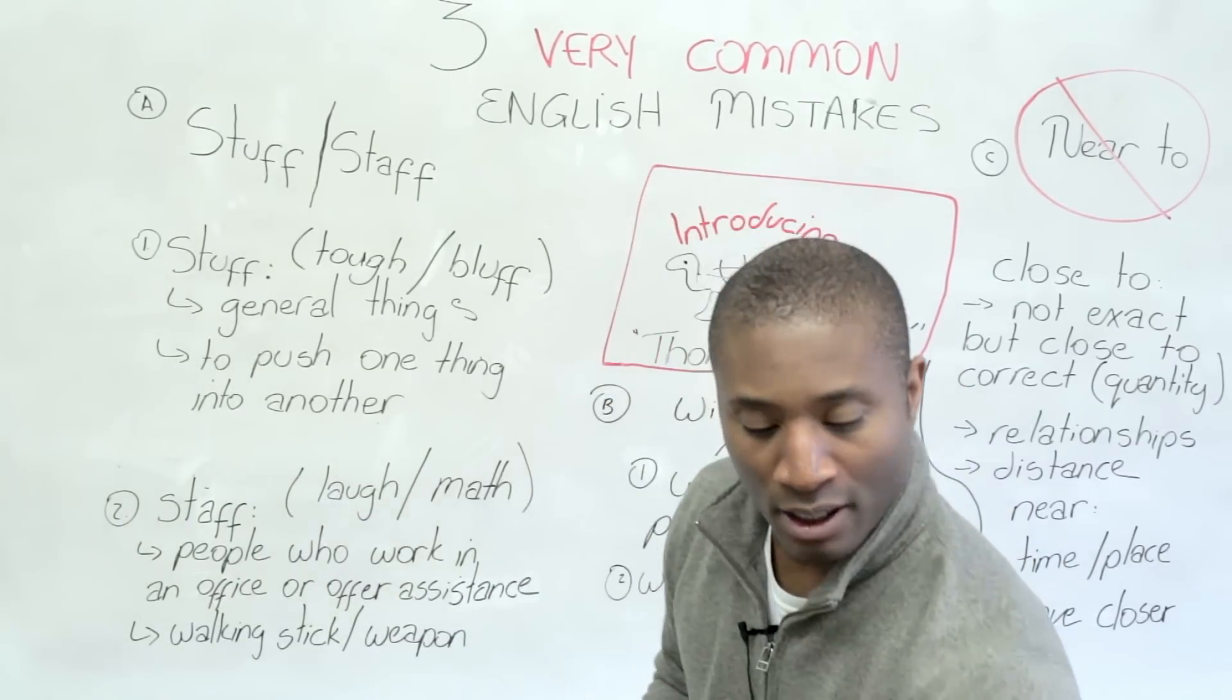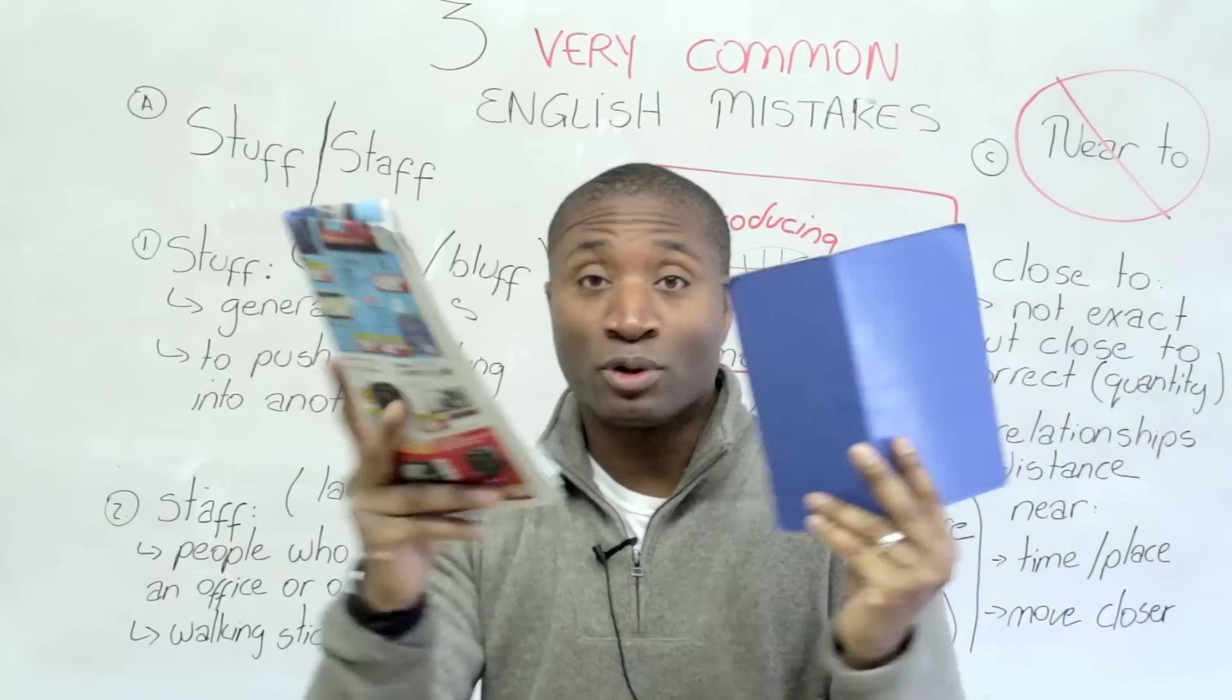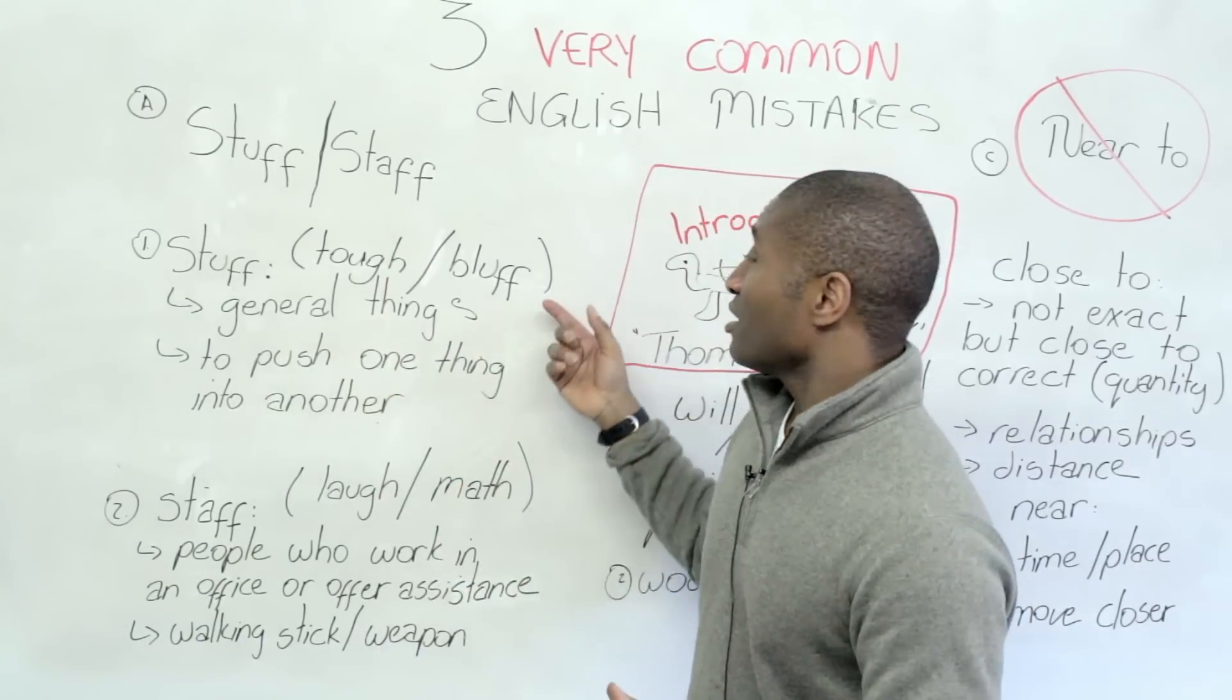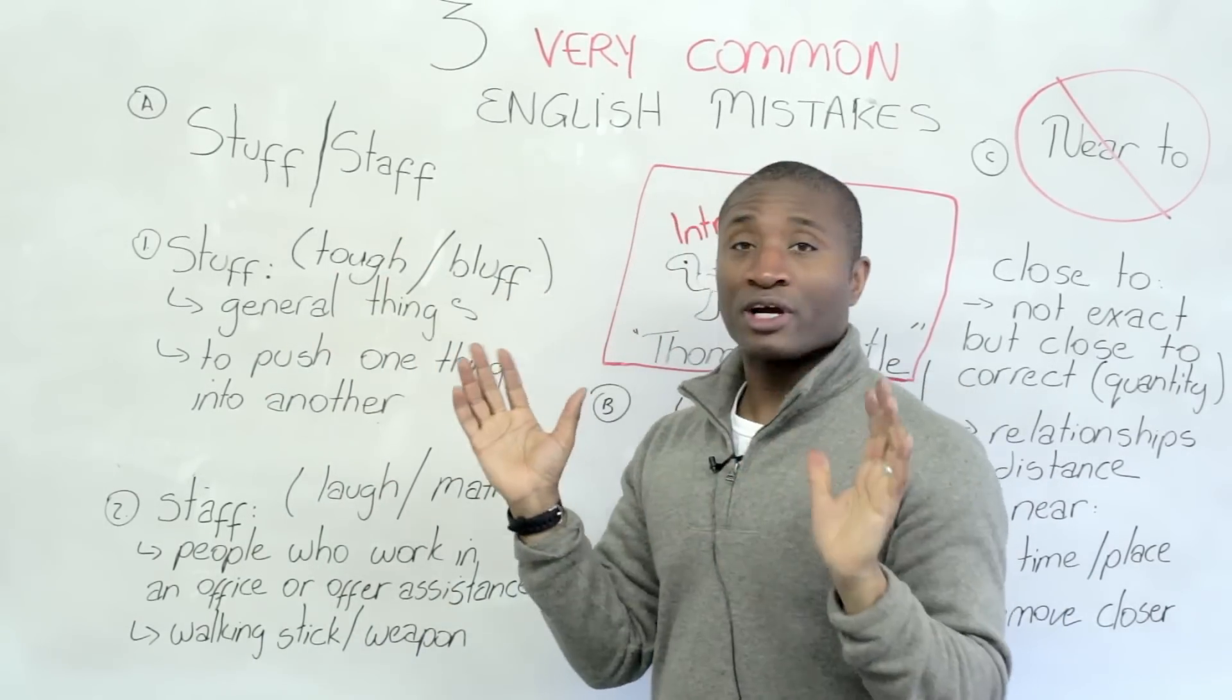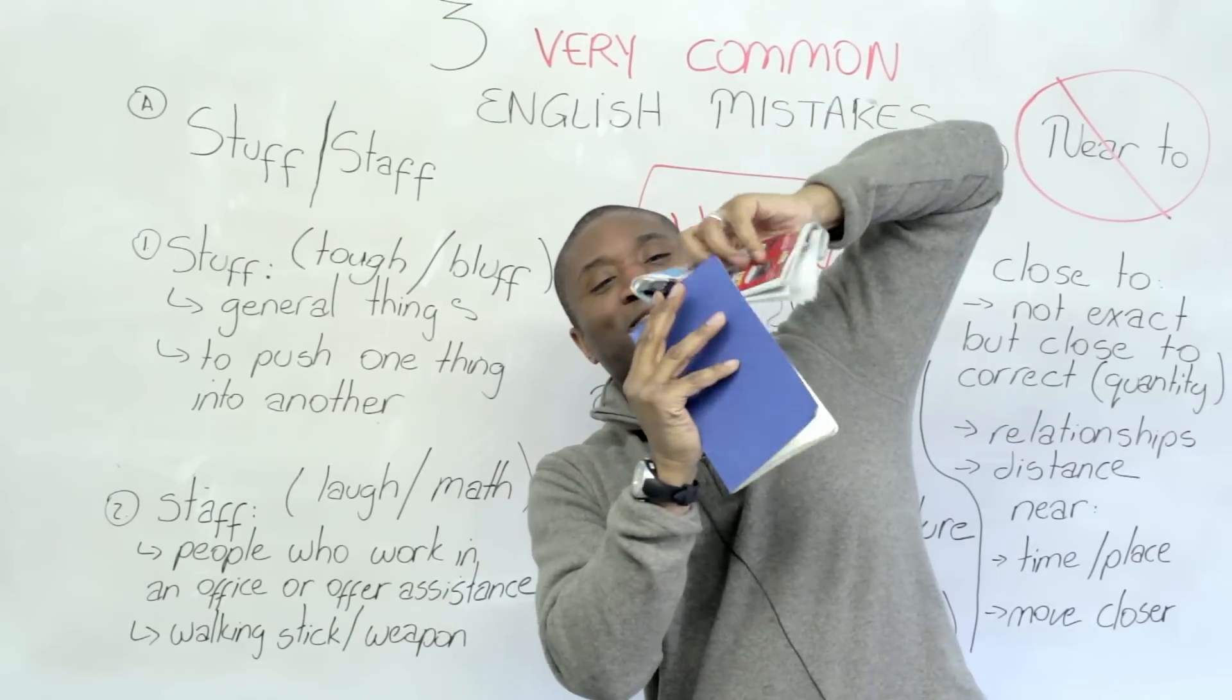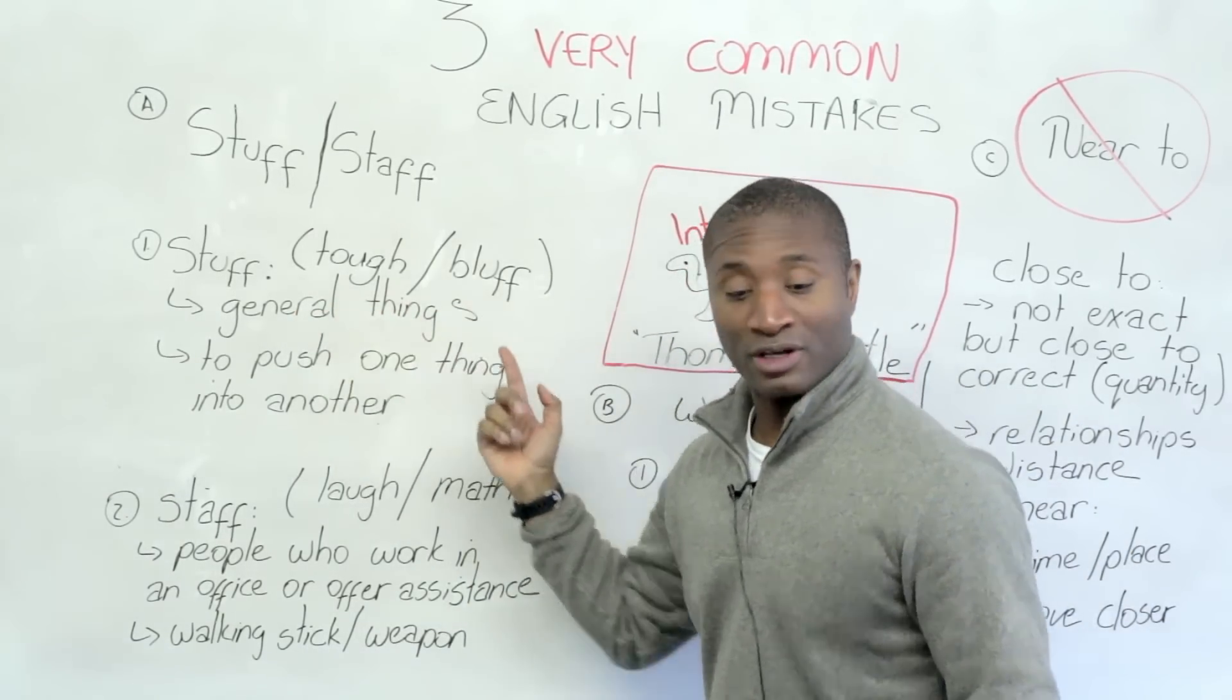When you have books and pens and things on a table, someone may say to you, whose stuff is this? And in this case, they mean whose things do these belong to? Or you can say, this is my stuff. Usually we don't use stuff for one person, because you can't say this is my stuff. It doesn't make any sense, really. So stuff is for many things, or a few. This is my stuff makes sense. Not singular.